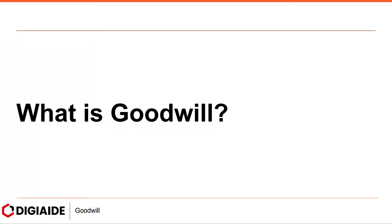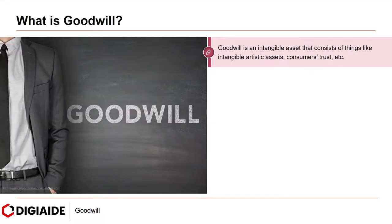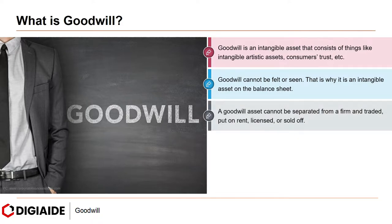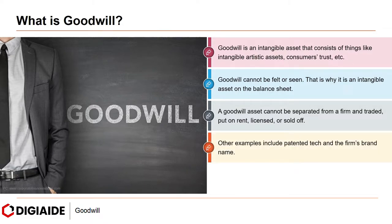Let's start with what is goodwill. Goodwill is an intangible asset that consists of things like intangible artistic assets, consumer's trust, etc. Goodwill cannot be felt or seen, which is why it is an intangible asset on the balance sheet. A goodwill asset cannot be separated from a firm and traded, put on rent, licensed or sold off. Other examples include patented tech and the firm's brand name.